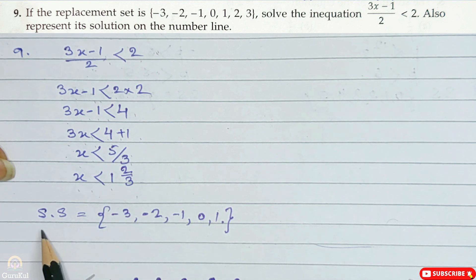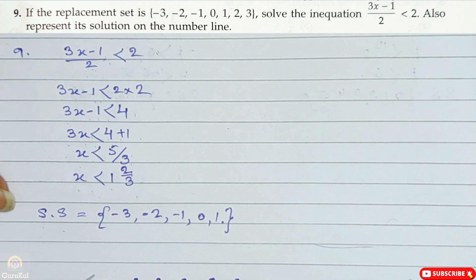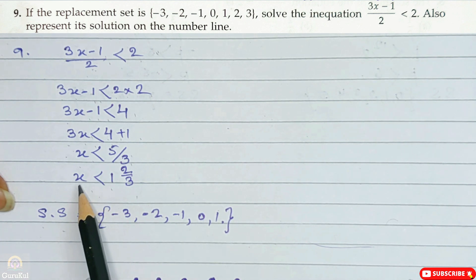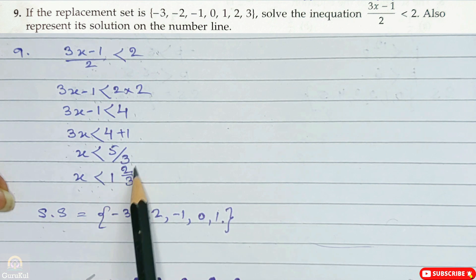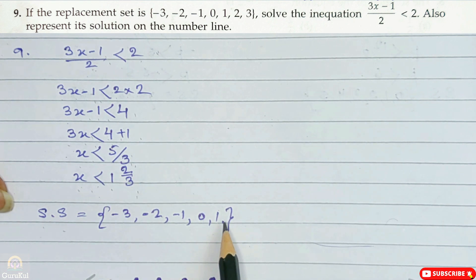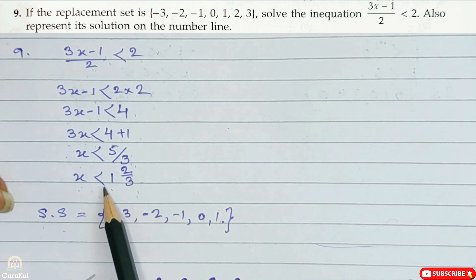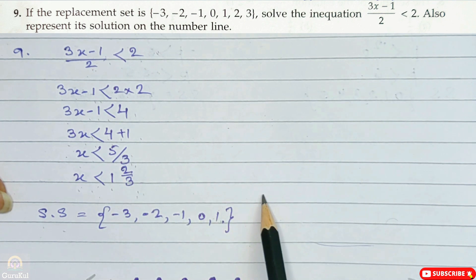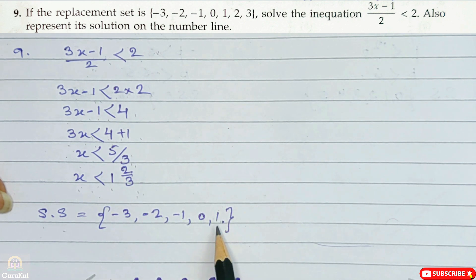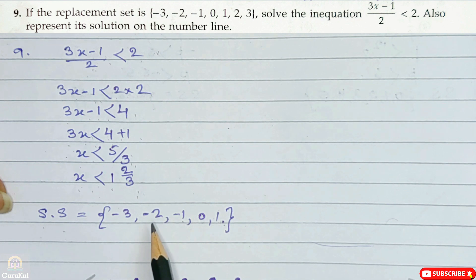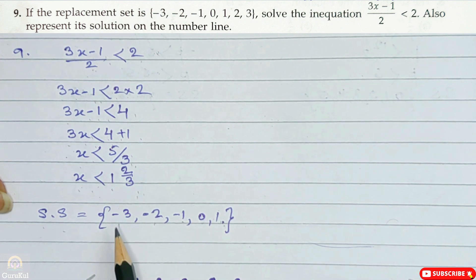Now the solution set from the replacement set: x is less than 1 and 2 by 3, meaning x must be less than that value. So from the replacement set we select 1, 0, minus 1, minus 2 and minus 3 — these five terms form our solution set.